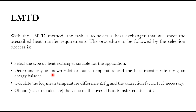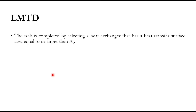Next, obtain or calculate the overall heat transfer coefficient for the fluids involved. Then calculate the heat transfer surface area A_S using Q = U·A·ΔT, so A = Q/(U·ΔT). The task is completed by selecting a heat exchanger that has a heat transfer surface area equal to or larger than A_S — this is what we call percentage over-design. We always over-design to avoid complications during operation.